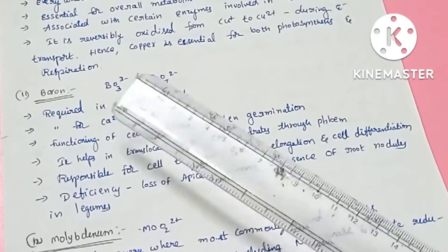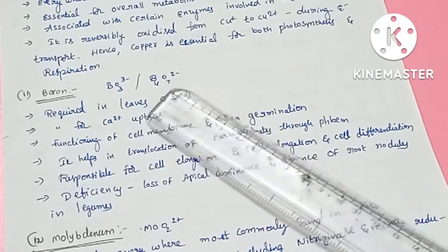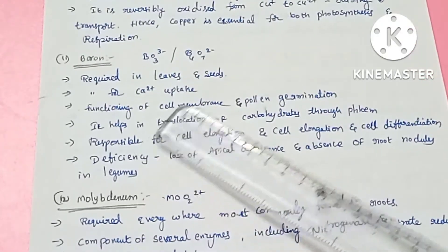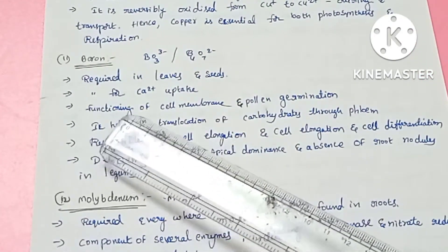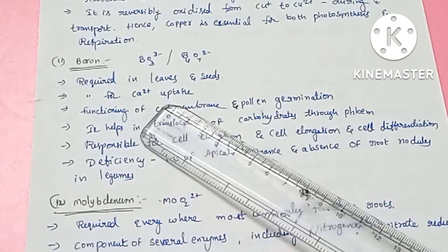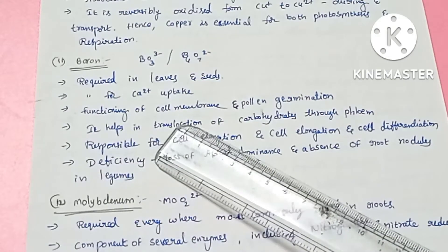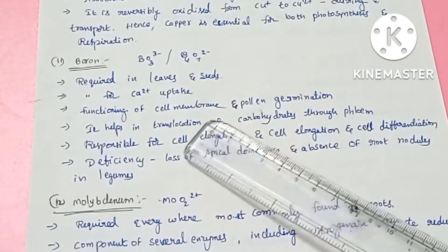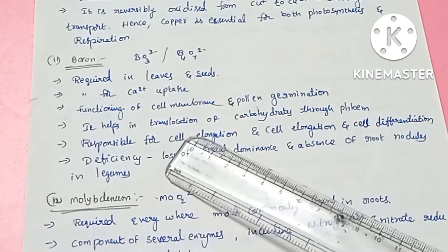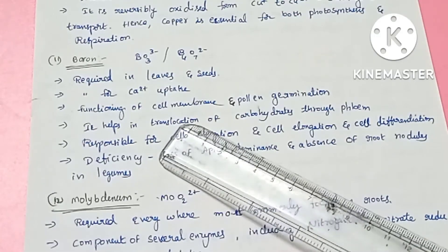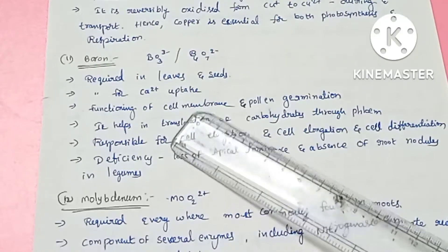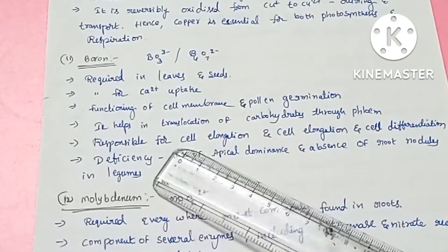Boron is absorbed in the B4O7-2 form and is very important for leaves and seeds. It is involved in calcium absorption, cell membrane functioning, and pollen germination. During pollen tube growth, two male nuclei are released — a process requiring boron.